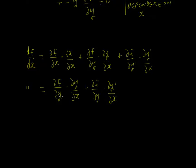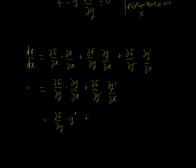We can rewrite this as: df/dx equals partial f by partial y times y', plus partial f by partial y' times y'' — where y' means dy/dx and y'' means d²y/dx².